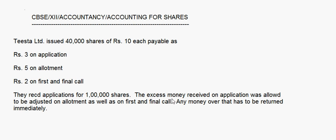This is how you handle questions where different categories have been given with different allotment ratios. Find the excess amount for each category; adjust it towards share allotment first, and if the question allows, adjust towards the first and final call as well. In some questions only allotment adjustment is permitted and the remaining excess is refunded. That brings us to the end of this session.